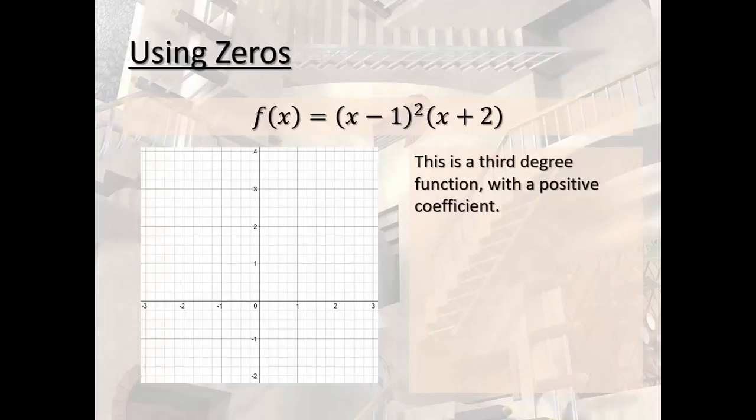So we know that it is a 3rd degree with a positive coefficient. We don't actually have to crank out the multiplication. We can just kind of see it. We have an x squared and an x, both with 1s. That's going to be x cubed and it's going to be positive.